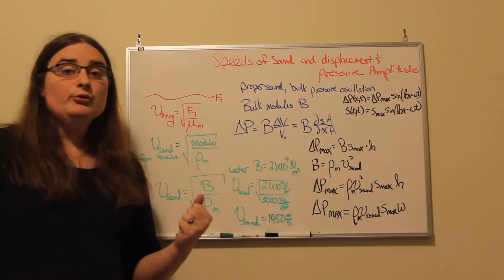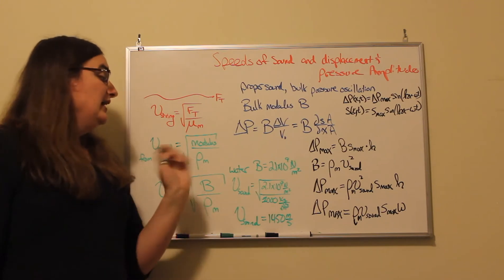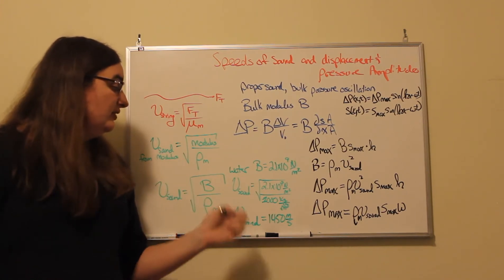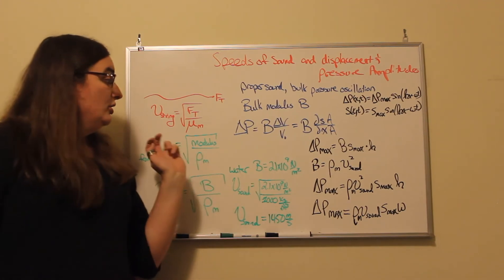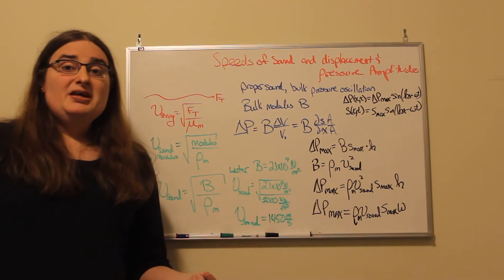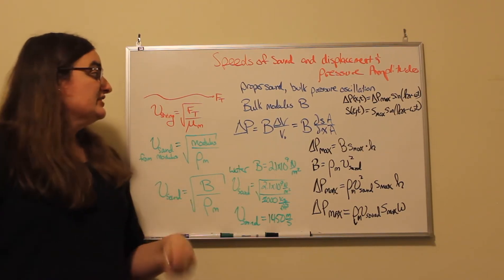So if I take the square root of 2.1 times 10 to the 6th, I get a value for the speed of sound of 1450 meters per second, which happens to be about four to five times faster than the speed of sound in air.